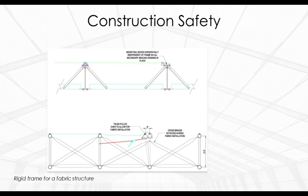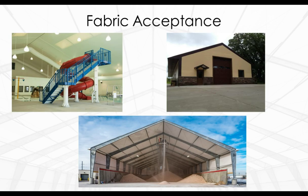A significant advantage of this system is increased safety during construction. Frames are completely braced and all cross cables are installed and tensioned prior to installing the fabric. The frames do not need to be flexed or bent to allow fabric to be properly installed. Safety is always first during construction, a vital consideration on all building sites.